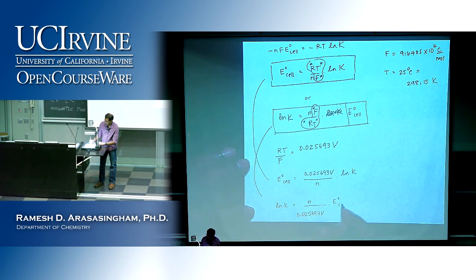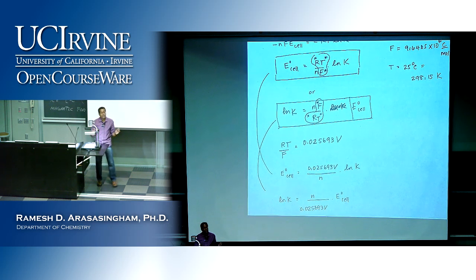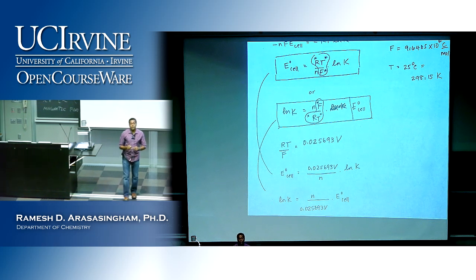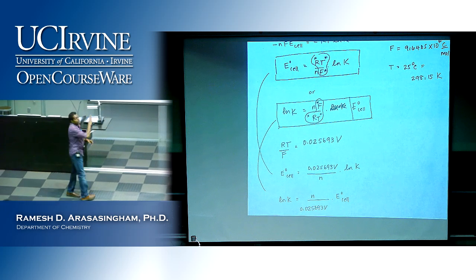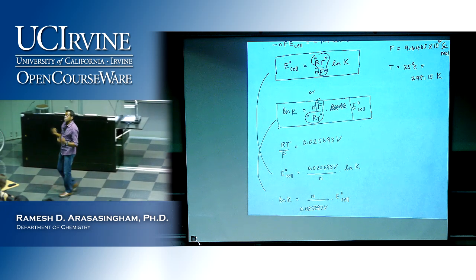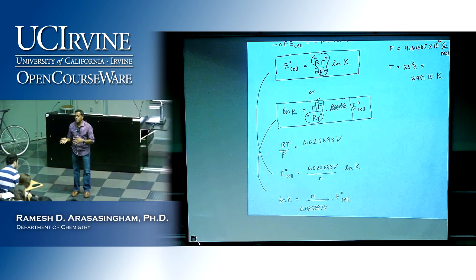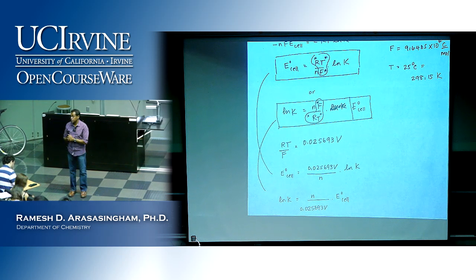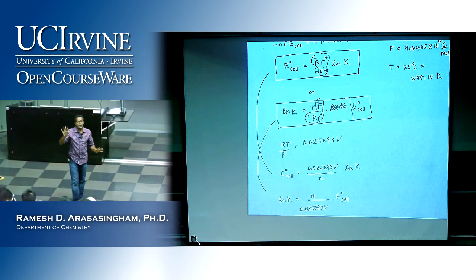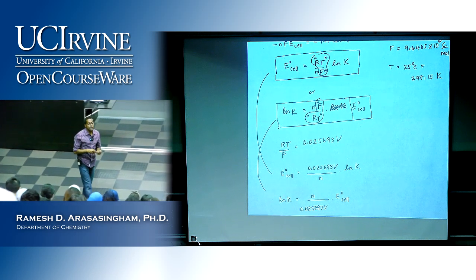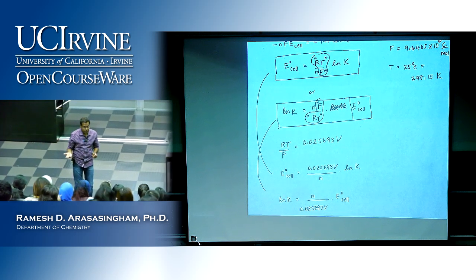So what this equation gives you is the relationship between cell potential and the equilibrium constant. You can calculate the equilibrium constant given the cell potential, or vice versa. If you set up a galvanic cell and measure E°_cell under standard conditions, you can now calculate K. I'll stop there for today, and next time we'll take an example applying this equation.